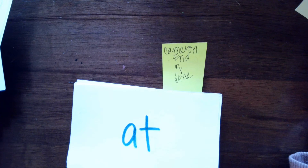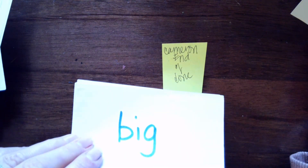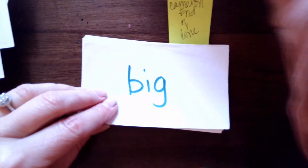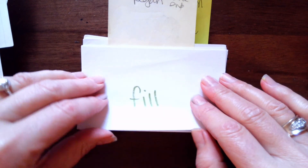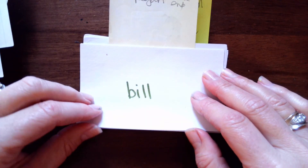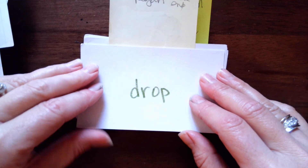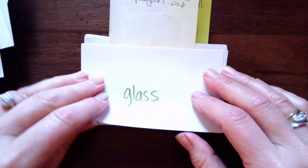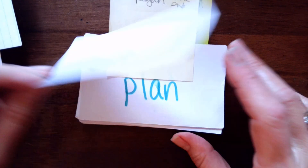At, at. Is B or a D? It's a B — b-ig — big. Fill, fill. Visit, visit. B or a D — B — b-ill — bill. B or a D — d, d-r-op — drop. G-l-ass — glass. Cut, cut.